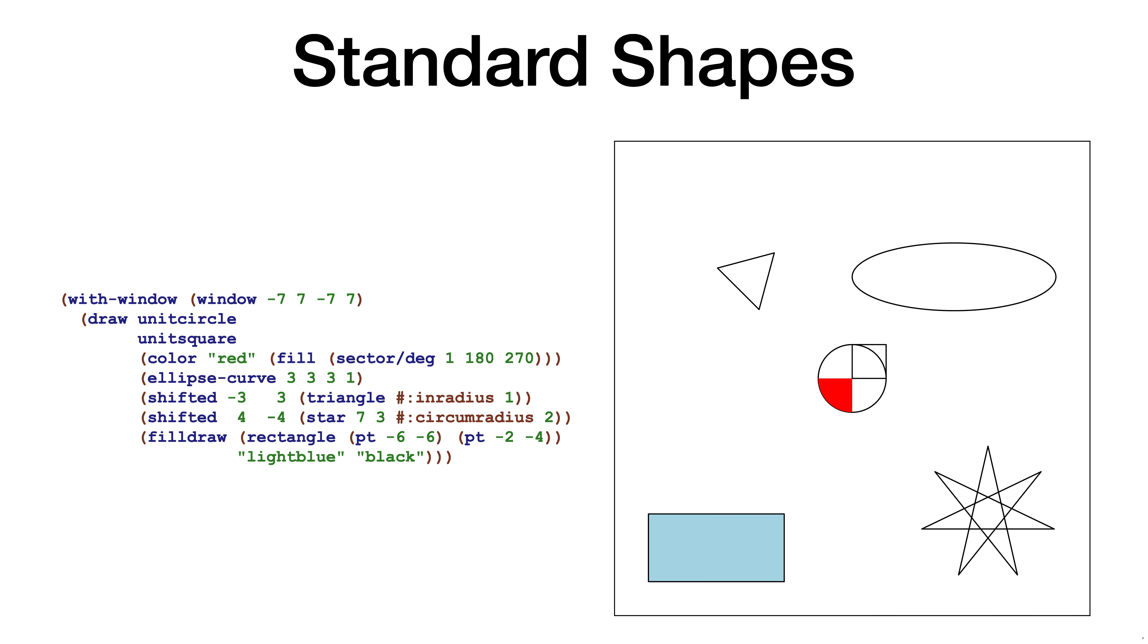This example shows that MetaPict has a lot of built-in shapes. At the middle of the screen, you see the unit circle and the unit square. A sector of the unit circle has been filled out with red. At the top right, you see an ellipse. And at the bottom right, we see a star. And at the bottom left, we see a rectangle.